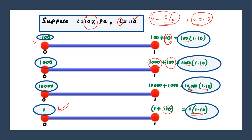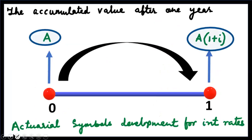Here 100 into 1.10. If you generalize this, deposit A for one year and receive A into (1 + i). Deposit an amount A at time 0 — this is the timeline for one year — and receive A interest, so that your final amount will be A plus Ai, that is A into (1 + i). The accumulated value after one year is A into (1 + i).